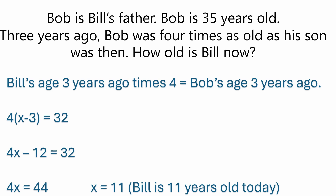Working with that, we want to come up with an equation. We know that three years ago the father, Bob, was four times the age that Bill was three years ago. So we can set up an equation by multiplying the son's age three years ago by four, and that would equal Bob's age three years ago. In other words, four times x minus three equals 32.